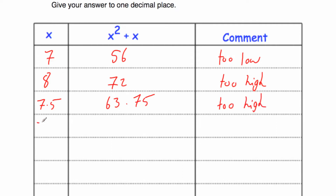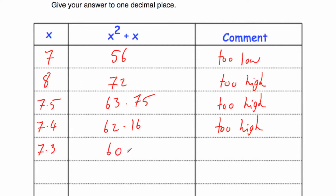Now let's try 7.4: 7.4 squared plus 7.4 equals 62.16, so that's too high. Now let's try 7.3: 7.3 squared plus 7.3 equals 60.59. That's too low because we want 62. We know that our answer is in between 7.3 and 7.4. And we're picking an answer to one decimal place, so the answer will either be 7.4 or 7.3.